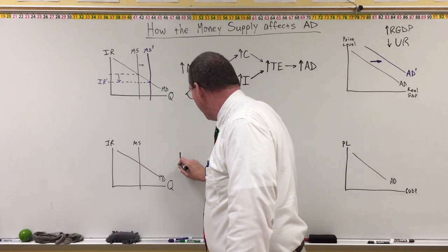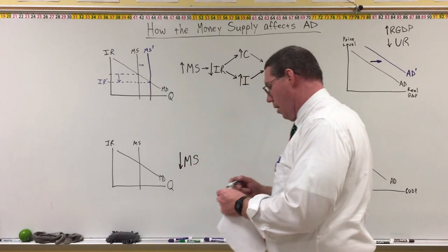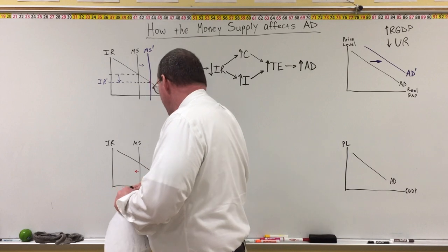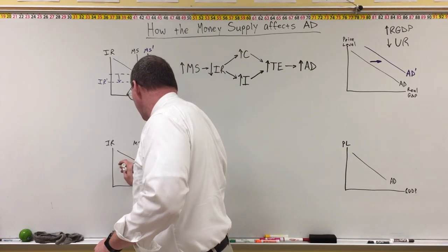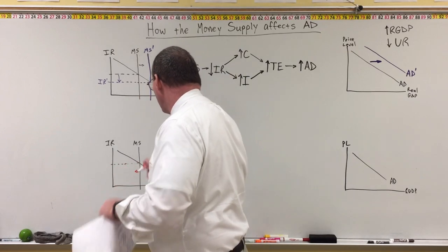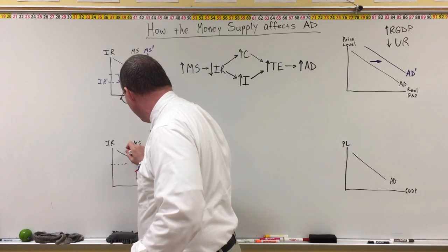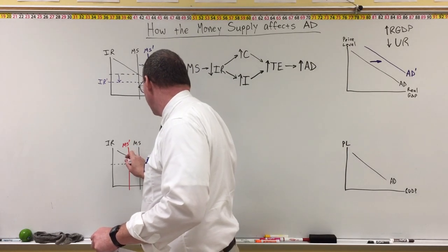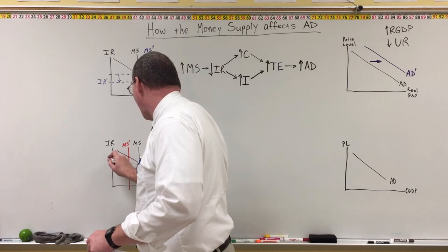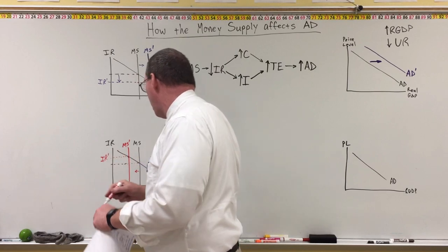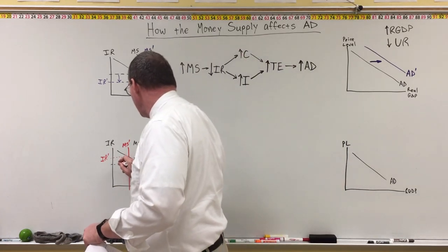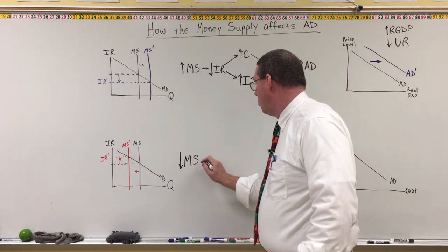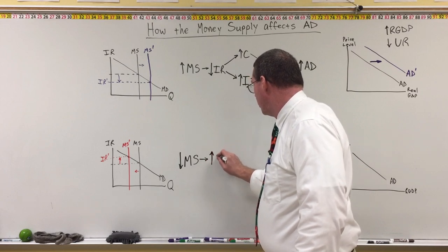Now let's talk about a decrease in the money supply. When the money supply decreases, going to our money market graph, that's a leftward shift of the money supply curve. Starting from our equilibrium interest rate, a leftward shift puts the supply curve over here — this is money supply prime — and the new intersection of money supply and money demand is higher, giving us an increase in interest rates, IR prime.